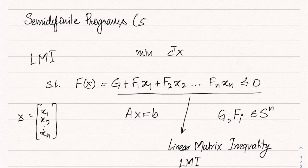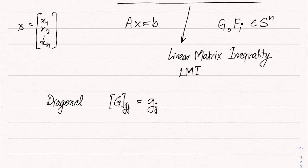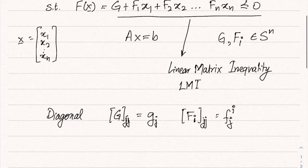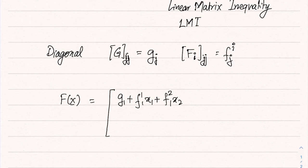This is the standard form for an SDP. Before we proceed, let's look at what this looks like in some special cases. Consider the diagonal case, when all matrices g and fi's are diagonal. Say the jj-th entry of g is g_j, and the jj-th entry of fi is f_j of i. If all of these are diagonal, then f of x is a matrix whose first entry would be g1 plus f1,1 x1 plus f2,1 x2 and so on all the way till fn,1 xn.